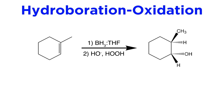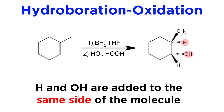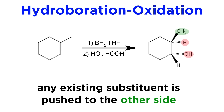It does not refer to any existing substituents on the molecule. For example, with this cyclic alkene, H and OH end up syn to one another, which means the existing methyl group gets pushed back and will be trans to the hydroxyl.